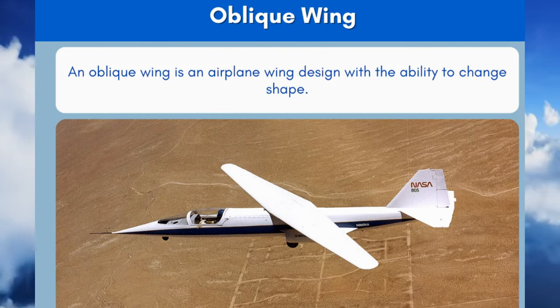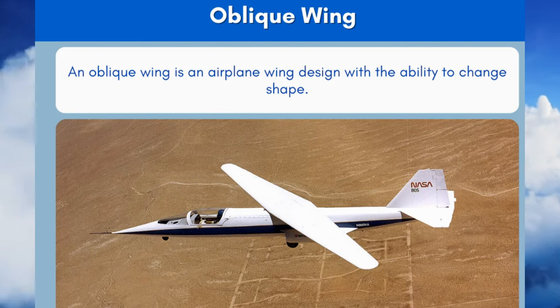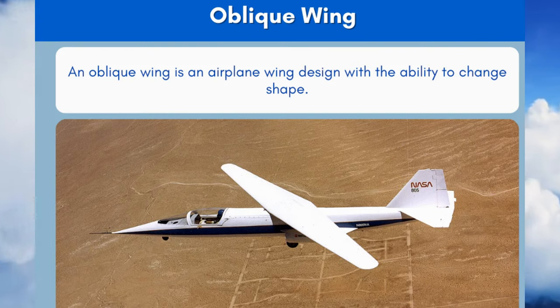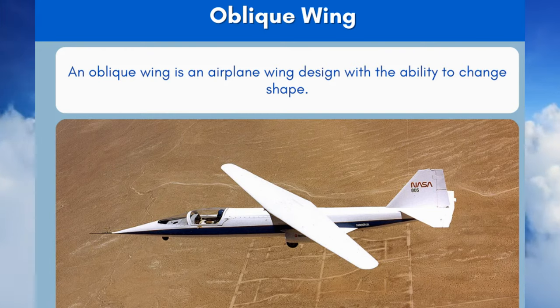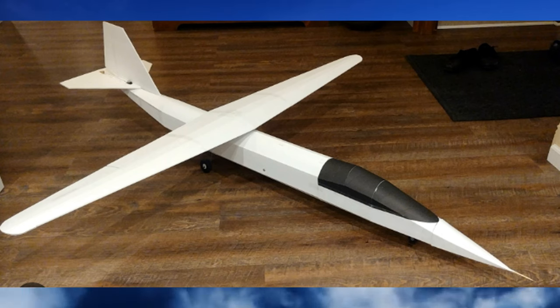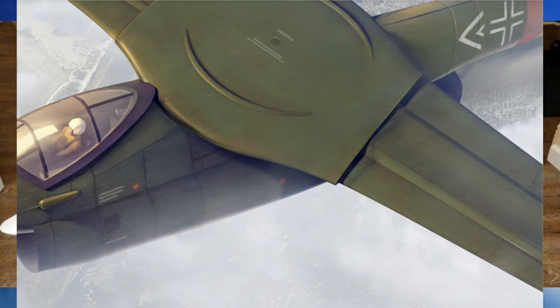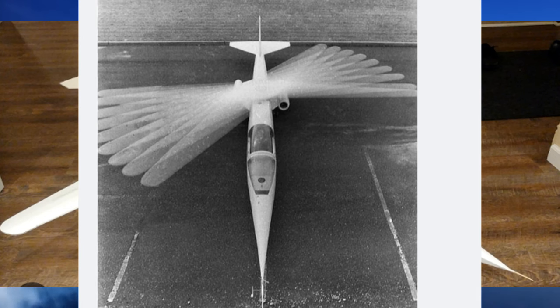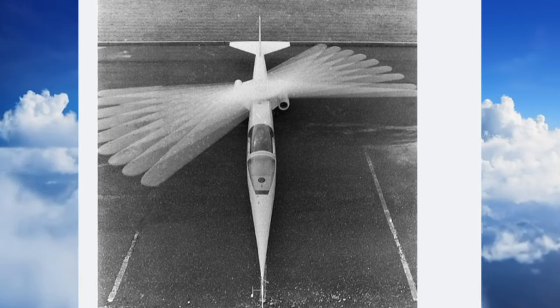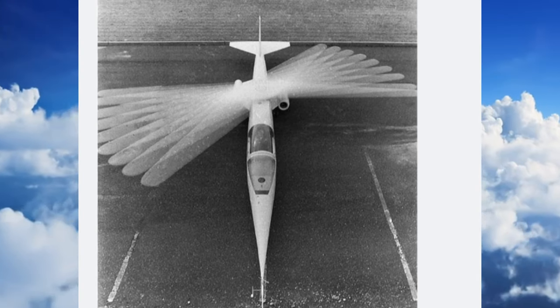10. Oblique Wing. An oblique wing is an airplane wing design with the ability to change shape. The wing has a central hinge which, when rotated, sweeps one end of the wing forward while pushing the other end back.